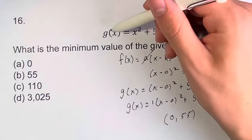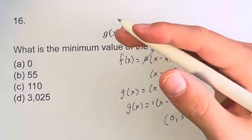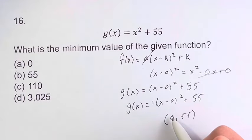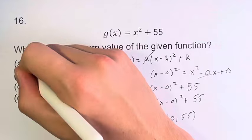Well, g is a function that takes values of x and spits out values of y. Right? So at the value of x is equal to 0, the value of the function is 55. And this value of the function, 55, is the minimum value. b is your final answer.